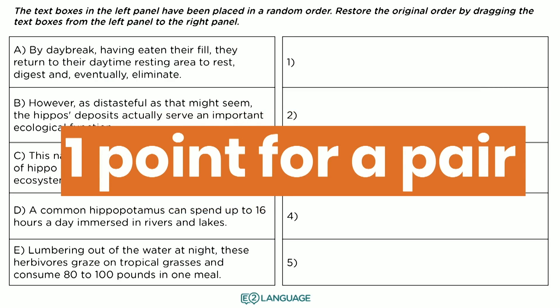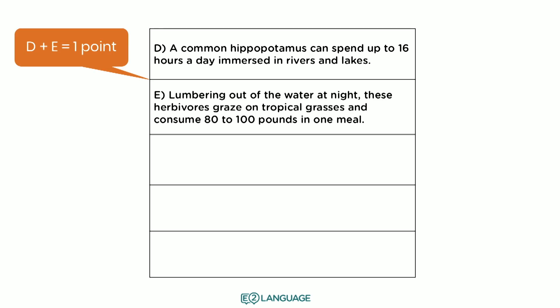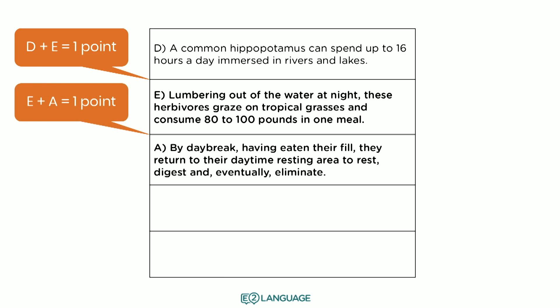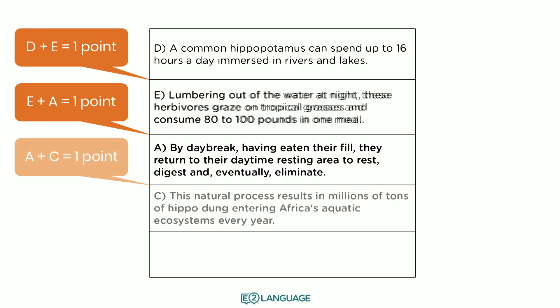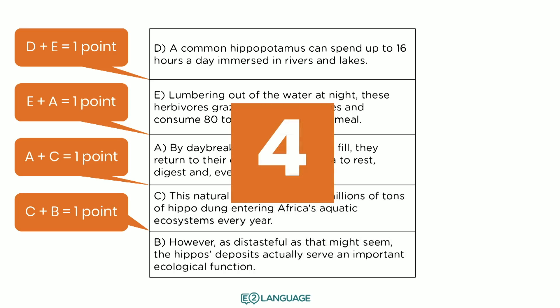You'll also get one point for a pair of sentences. Let me show you how the scoring works. Let's say you get the first sentence correct — you put D at the top — well done, you will not get a point for this. You will only get a point if you then put the second sentence correctly and join the first and the second sentence. So D and E, you'll get one point. And if you put the next sentence, A, and that's correct, A equals one point. So far you have two points. Then you put C — A and C join — that's one point. And let's say B is the final sentence, C and B are there, and your total correct score would be four. That's the maximum score for this particular task.